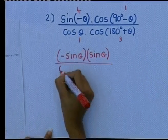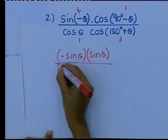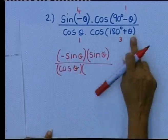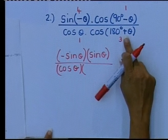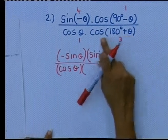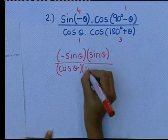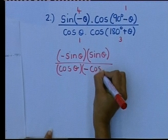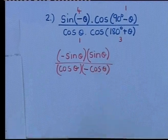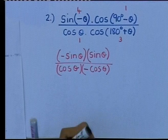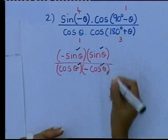Cos theta remains cos theta, you don't have to do anything — put that in a bracket, multiplying immediately. 180 plus theta is in the third quadrant. How is cos in the third quadrant? It is negative, so that is negative cos theta. I hope that when you reduced your answers you all had this — this is one, two, three, four marks.